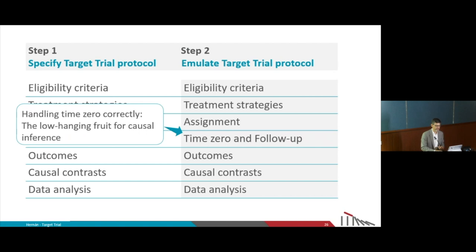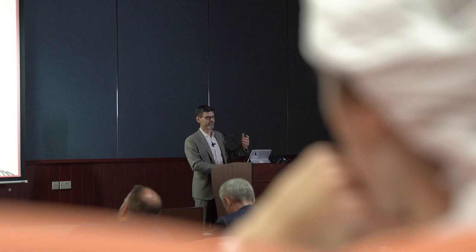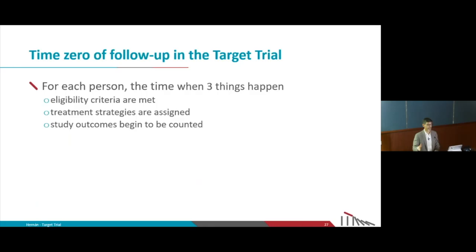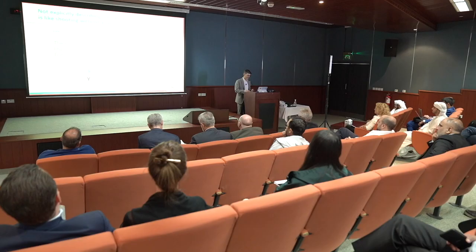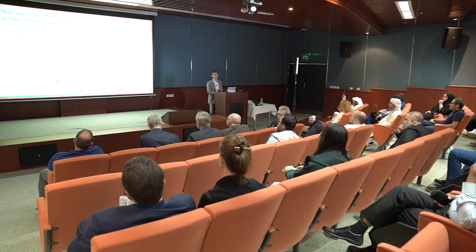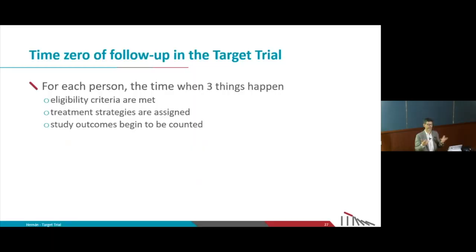Time zero in a truly randomized trial is very well defined — it's the time of randomization. At the time of randomization, we start following people. It's so trivial we don't give it much thought. But let's think about what happens at time zero: it is when a person meets the eligibility criteria and is assigned to a treatment. Those two things happen at time zero.